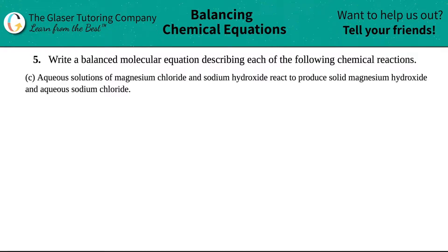Number five, write a balanced molecular equation describing each of the following chemical reactions. And we have letter C of the bunch. So in this reaction, we have aqueous solutions of magnesium chloride and sodium hydroxide react to produce solid magnesium hydroxide and aqueous sodium chloride.